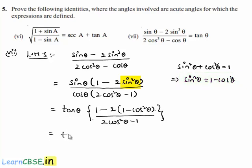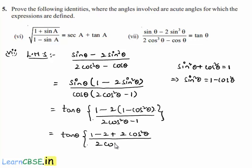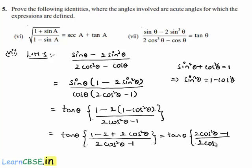Which is equal to tan theta into 1 minus 2 times 1 is 2, and minus 2 cos squared theta divided by 2 cos squared theta minus 1, which will be equal to tan theta times — here by rearranging the terms, we get 2 cos squared theta minus 1 divided by 2 cos squared theta minus 1.